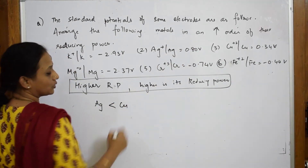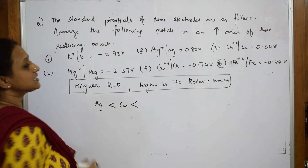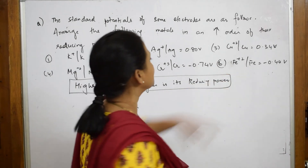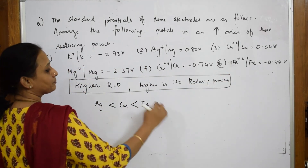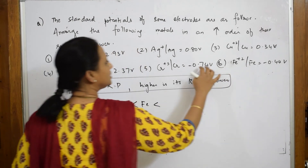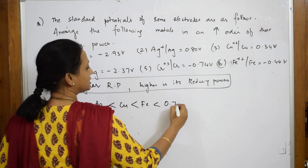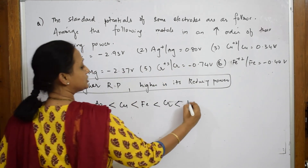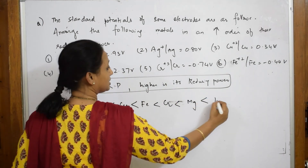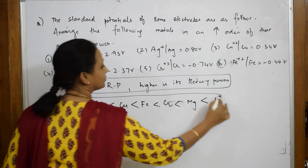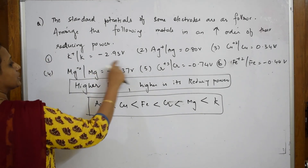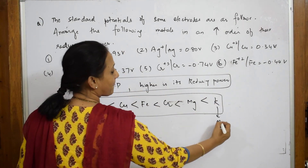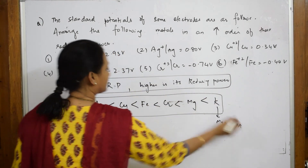Then comes copper. Among the negative values: −0.74 is chromium, −0.7 is iron, and −2.37 is magnesium. So after copper, we have iron, then chromium — wait, the next higher negative value after iron (−0.74) would be chromium — and after magnesium comes potassium last. Higher the reduction potential value, more is its reducing power. The last element has the maximum reducing power, and the minimum potential value means the most reducing power.